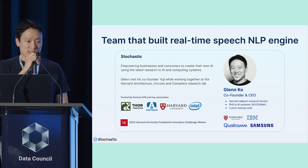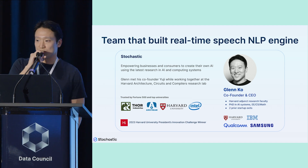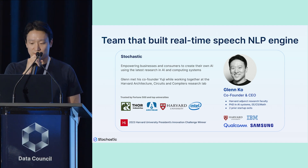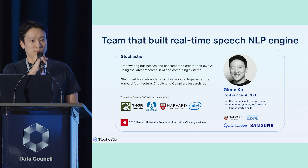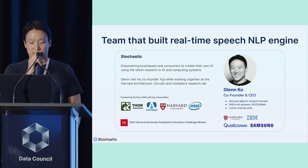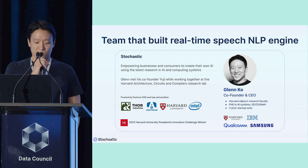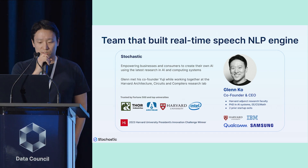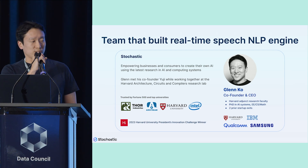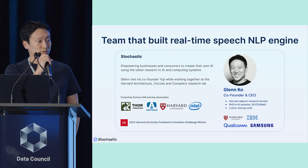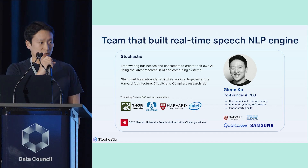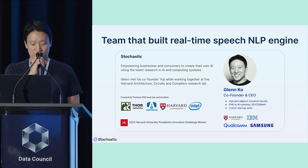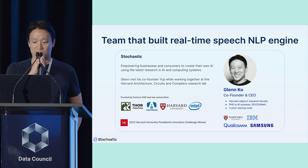We decided to launch Stochastic to help AI be more accessible to others instead of just the large AI leaders like Google, Meta, and Microsoft. We're currently working with several Fortune 500 companies and also top universities, including Thor Industries, Airstream, Harvard University, Intel, and more. And last year, we were fortunate enough to win Harvard University's President's Innovation Challenge.